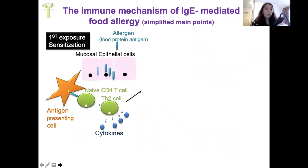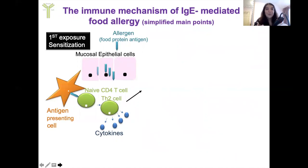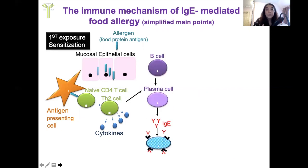Food allergy occurs once a person has become sensitized. Once a person is able to produce antibodies to the allergen, they can have a reaction. Initial sensitization results in an asymptomatic reaction where IgE antibodies are produced. What happens is the food protein antigen diffuses through epithelial cells and is picked up by antigen presenting cells such as dendritic cells, which travel to lymph nodes and present the antigen to naive CD4 T cells. These then differentiate into T helper 2 cells, which secrete cytokines that enable B cells to differentiate into plasma cells producing IgE antibodies.